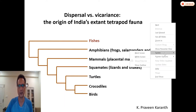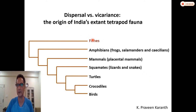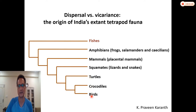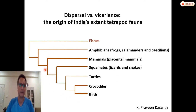For those of you who are not aware of tetrapods, tetrapods are basically four-limbed vertebrates — so fishes are not included. Tetrapods typically consist of amphibians, mammals, squamates, turtles, crocodiles, and birds. In each of these groups there have been limb reduction and limblessness, but that is a derived character. This whole group is collectively called tetrapods.